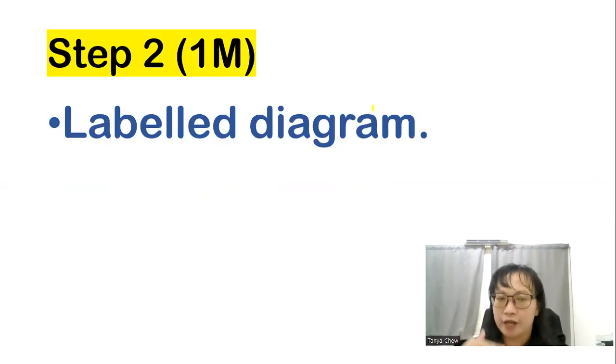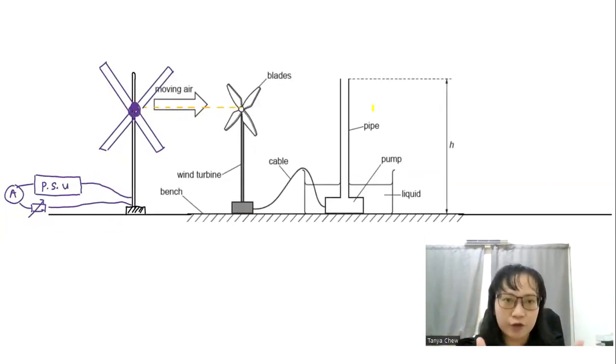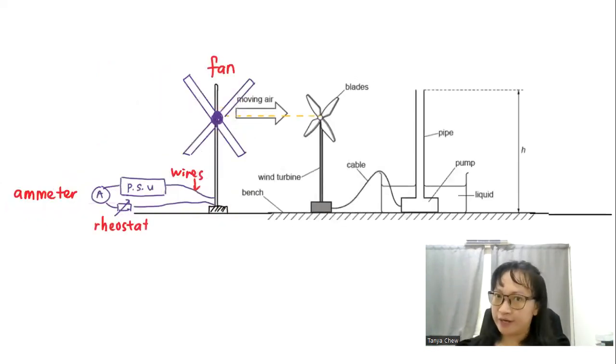So step two, go for labeled diagram. That will give you one mark. It's not just any diagram. You have to label everything. So I'm using the diagram that figure 1.1 that they gave us here. So I know this is my fan with the four blades here. And my fan needs a power supply to work on. So PSU means power supply unit, the DC power supply. And I connect it to ammeter because I want to see the current that flows through the fan and the variable resistor as the safety precaution to control the amount of current that flows through the fan. And like what I say, not just any diagram, you have to label your diagram. So this is my fan, this is connecting wires, this is my ammeter, this is a rheostat. And PSU means power supply unit or DC power supply.